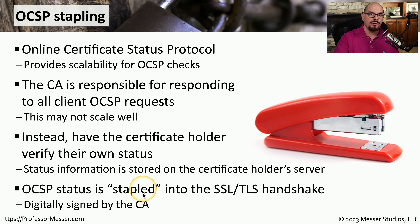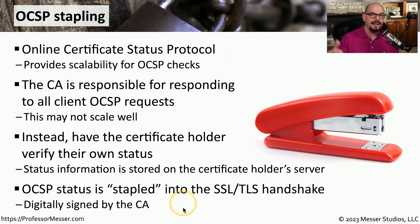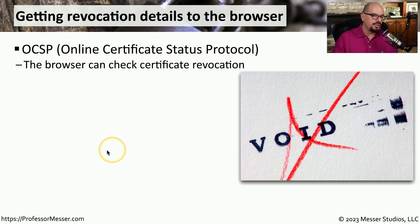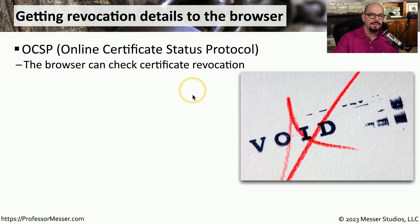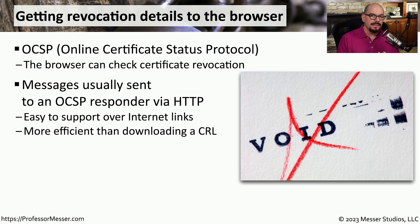We obviously can't trust a third party web server to truthfully tell us the status of the certificate, so the OCSP protocol uses a digital signature by the CA to validate its status. Most browsers today support OCSP for the Online Certificate Status Protocol, which means the browser itself can handle all of the checks for revocation when you visit a third party website. If you're not stapling the status into the handshake message, you could use a third party server to provide the OCSP status information.